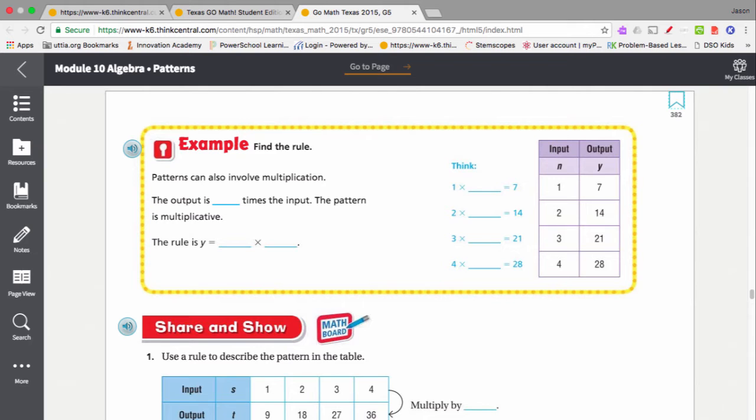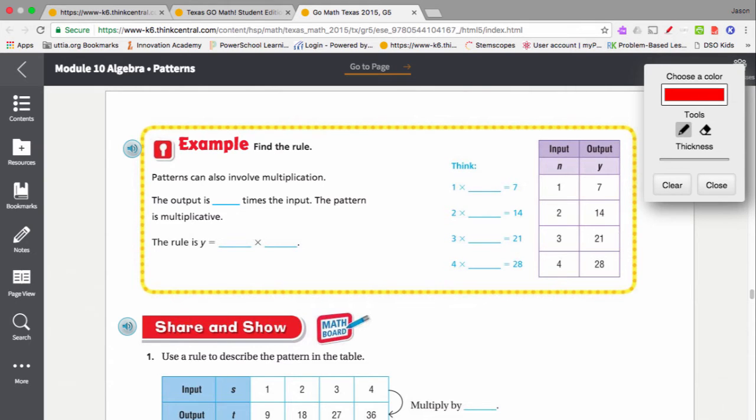The first pattern that we had was an additive pattern. That means we added something to the input to get the output. This pattern is a multiplicative pattern, which means we're multiplying something times the input. So here we see our input is one, output is seven. Input two, output 14. Input three, output 21. Input four, output 28.